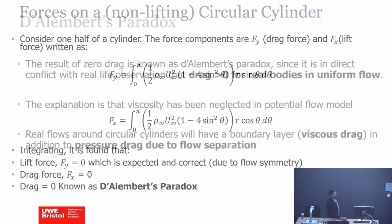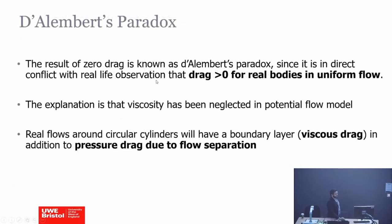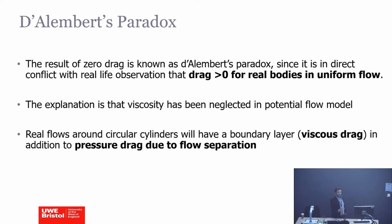This result of zero drag is famously known as D'Alembert's paradox, since it is in direct conflict with what we know from real life. At the time of D'Alembert — the person who came up with this problem — people knew from experiments that the drag is not zero, so they were baffled by the contradiction. One of the biggest limitations of potential flow is that it cannot calculate drag — you just get zero drag.